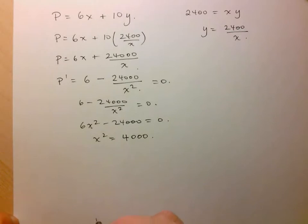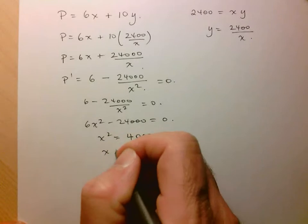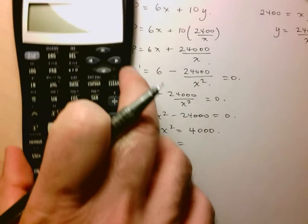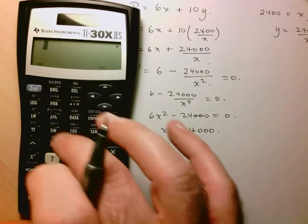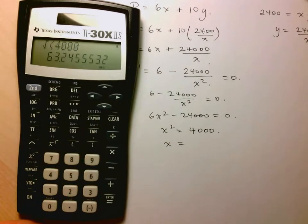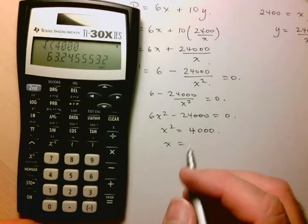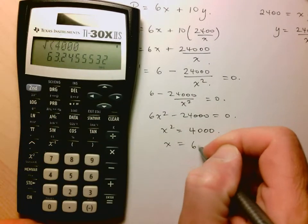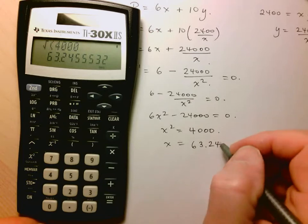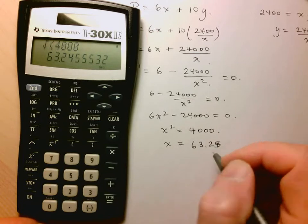So here we've got 6, and here we've got the 24,000, which is just a constant, and we've done this many times before. The derivative of X to the negative 1 is negative 1X to the negative 2, so we'll have X squared in the denominator. And we need to determine this is equal to 0. So here we've got 6 minus 24,000 over X squared needs to be equal to 0. So I'll multiply both sides of the equation by X squared. So I end up with 6X squared minus 24,000 equals 0. So X squared is equal to 24,000 over 6. So that will be 4000.